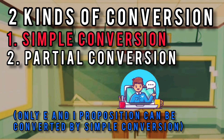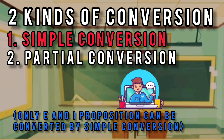What is simple conversion? A conversion is said to be simple if the quantity of the converse is the same as the quantity of the convertent. If the quantity is universal, the converse must also be universal. If the quantity of the original proposition is particular, the quantity of the converse must also be particular.